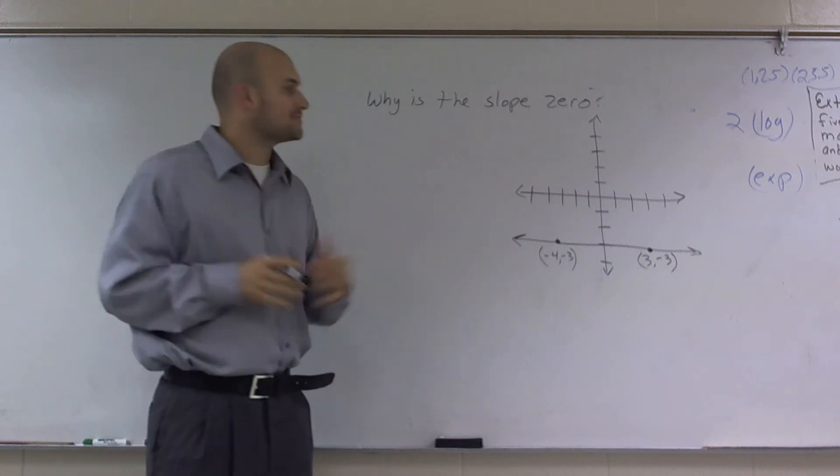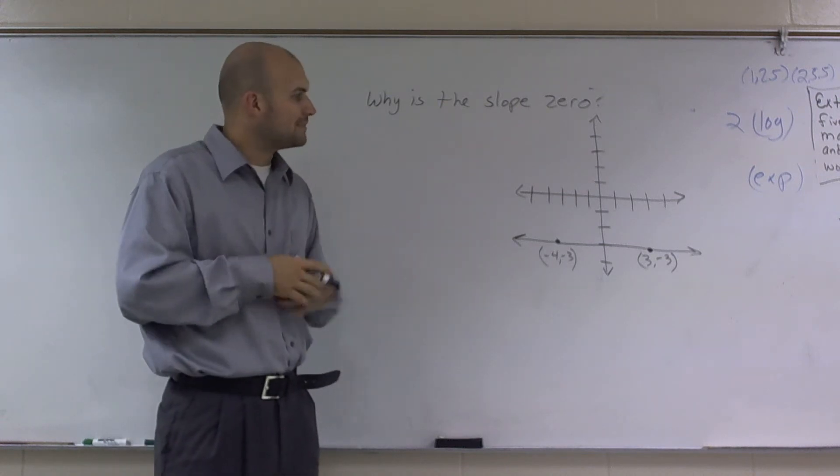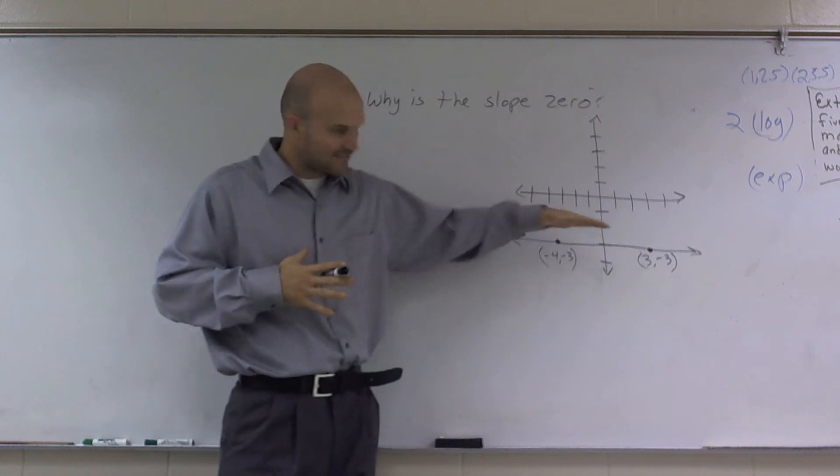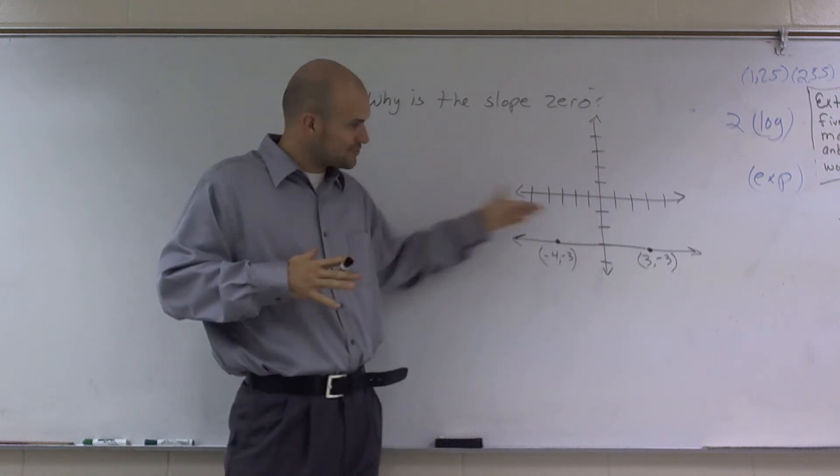Why is the slope 0? Well, here we have a line, right? And it looks like it's a flat line. It's not going up, it's not going down, it's going straight across.